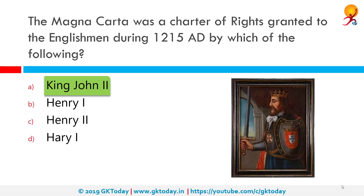The document contained written promises between King John and his subjects, mentioning that the King would govern England and deal with its people according to the customs of feudal law.